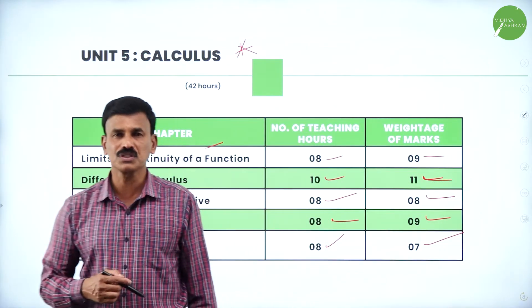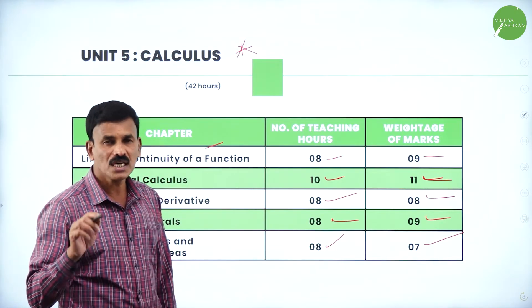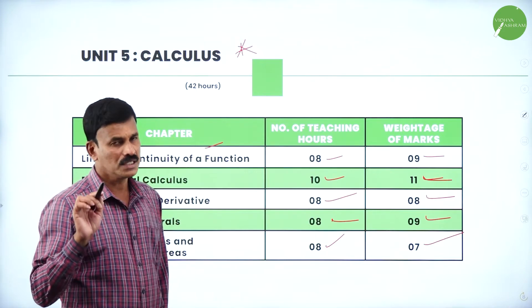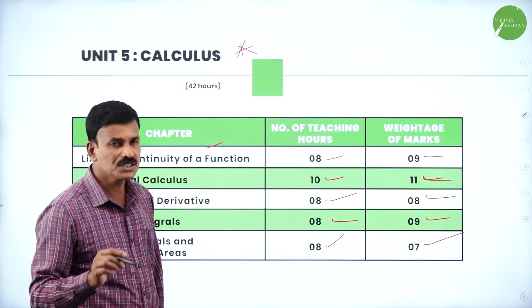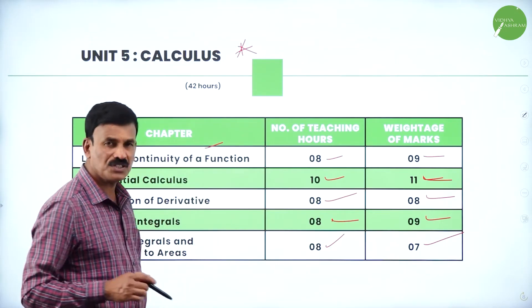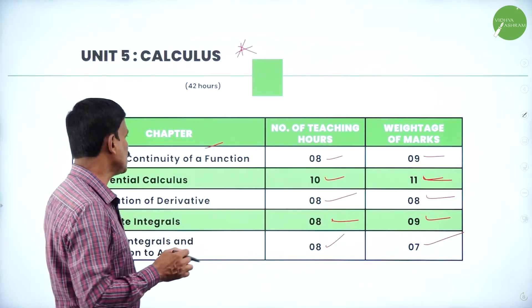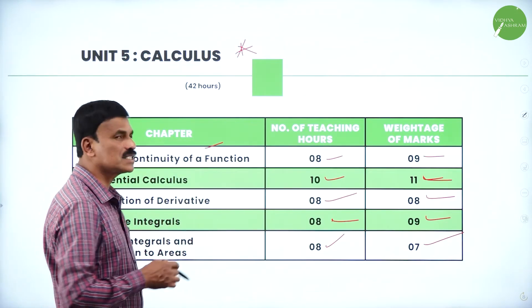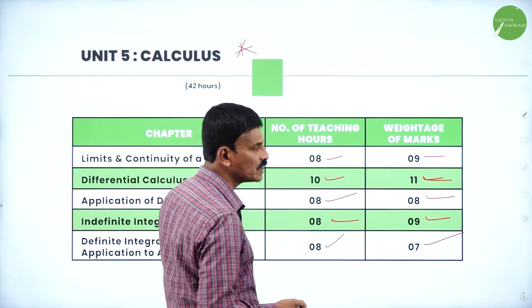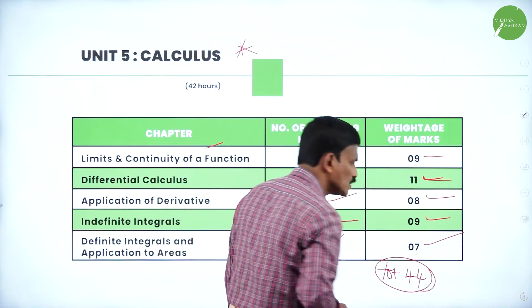So in the Calculus part we will have Limits, Differentiation, and Integration. Limits and Continuity: 9 marks; Differential Calculus: 11 marks; Application of Derivatives: 8 marks; Definite Integrals: 9 marks; Application of Definite Integrals and properties of integrals: 7 marks. The total marks from this Calculus unit is 44 marks. This is the detailed syllabus for your 2nd PUC basic mathematics.